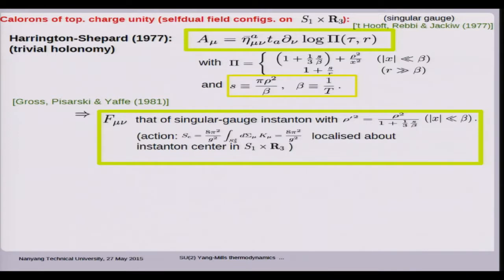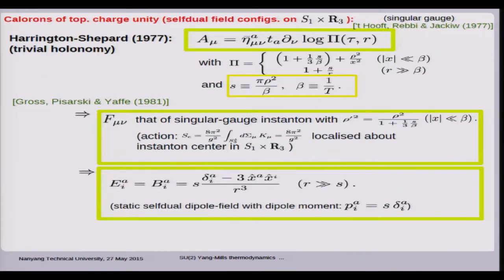As you go far away spatially from the instanton center, you run into static configurations characterized by self-dual dipoles. The dipole moment is again given by the spatial separation scale s. Going very closely to the instanton center, we can conclude that topological charge is actually localized at the instanton center in the sense that the Chern-Simons current integrated over an S3 arbitrarily small but centered at the instanton center is saturated. We can conclude that topological charge in the singular gauge situation is extremely localized.